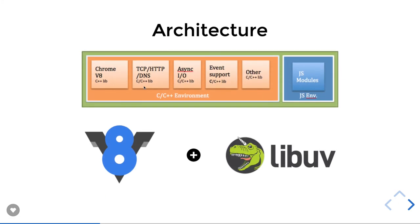Node.js architecture uses libuv for creating and managing the event loop structure. It also uses C and C++ bindings to access the network, async I/O, TCP, and HTTP. The underlying implementation is the V8 runtime engine, which is built in C++. All the core libraries are C and C++ — but a JavaScript interface is exposed to developers so they can create HTTP servers or read files in JavaScript, while the underlying bindings remain in C and C++.